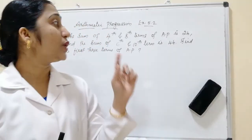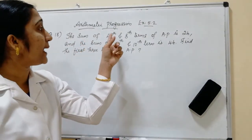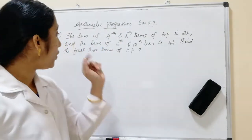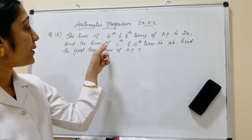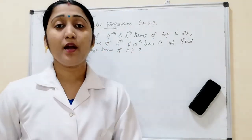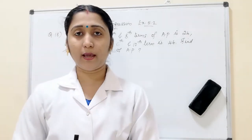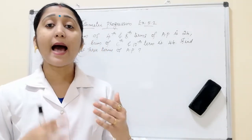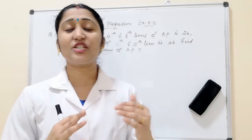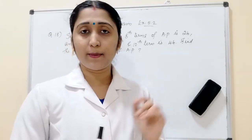Let us see today's class. The sum of the 4th and 8th terms of an AP is 24, and the sum of the 6th and 10th terms is 44. Find the first three terms of the arithmetic progression.